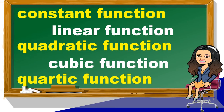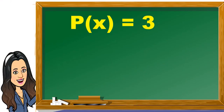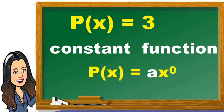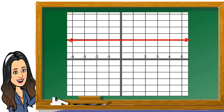What makes them different from each other? Let us have some examples. Given p(x) = 3, this is a constant function. A constant function is of the form p(x) = ax⁰. The highest power of the variable x is 0. Note that p(x) = 3 is the same as p(x) = 3x⁰, because x⁰ = 1, so 3x⁰ = 3 × 1 = 3. Here is an example of the graph of a constant function — it is a horizontal line.